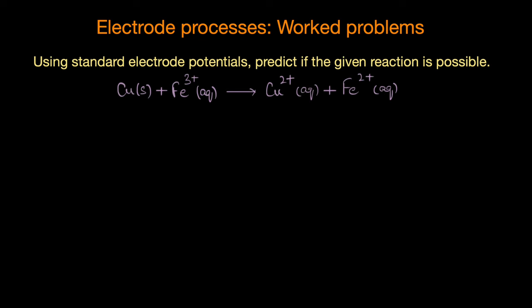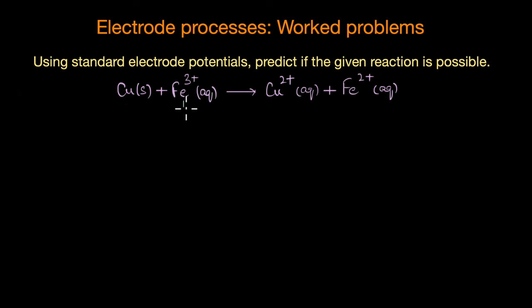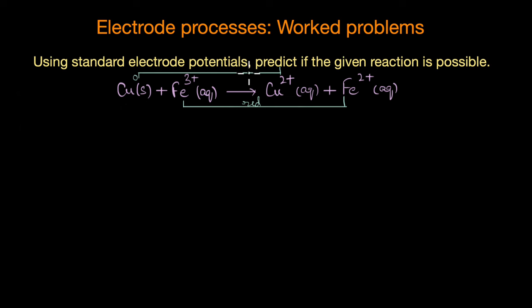The reaction at hand is Cu + Fe³⁺ → Cu²⁺ + Fe²⁺. The first step is to identify the species that are getting oxidized and reduced, then write their half reactions. Iron changes its oxidation state from +3 to +2, so iron is getting reduced, whereas copper changes its oxidation state from 0 to +2, so copper is the species getting oxidized.